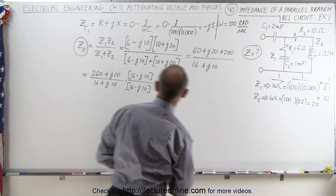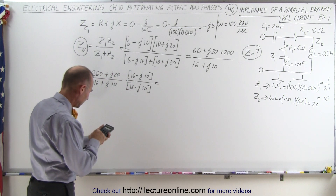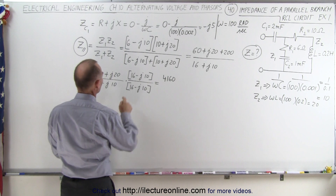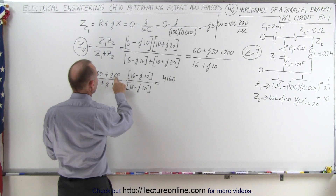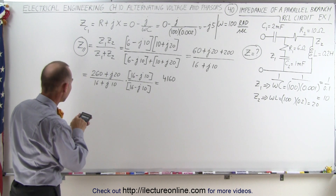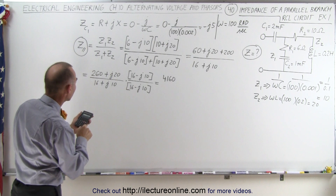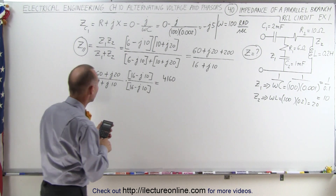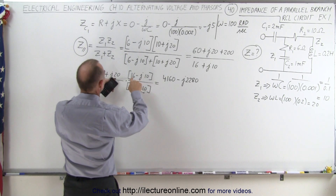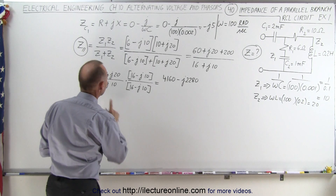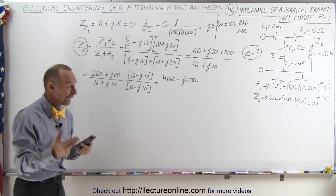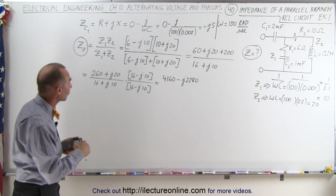Dividing complex numbers requires multiplying numerator and denominator by the complex conjugate of the denominator, which is 16 minus j10. In the numerator: 260 times 16 equals 4160. For the imaginary parts: we have plus 320 and minus 2600, giving minus 2280j. Multiplying the two imaginary parts together gives minus j squared times 200, and since j squared equals negative one that gives plus 200. So the numerator becomes 4160 plus 200 = 4360, minus j2280.